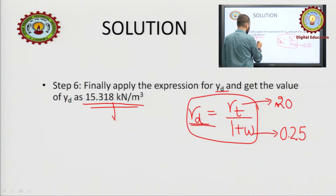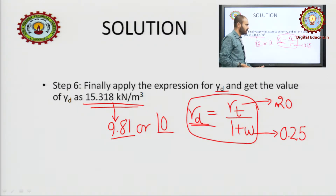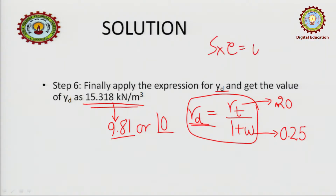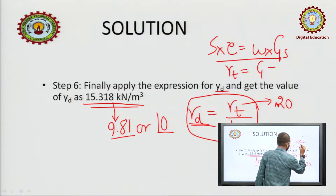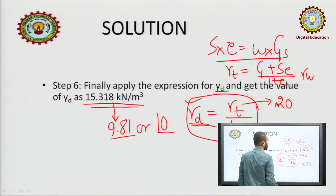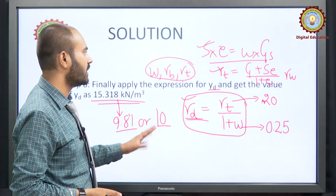The result may differ slightly depending on whether you use 9.81 or 10 for γW. This was the first question — not much tough. Just three expressions were used: S·E = w·Gs, γT = (Gs + S·E)/(1+E) × γW, and γD = γT/(1+w). Three parameters — w, γD, γT — were calculated.